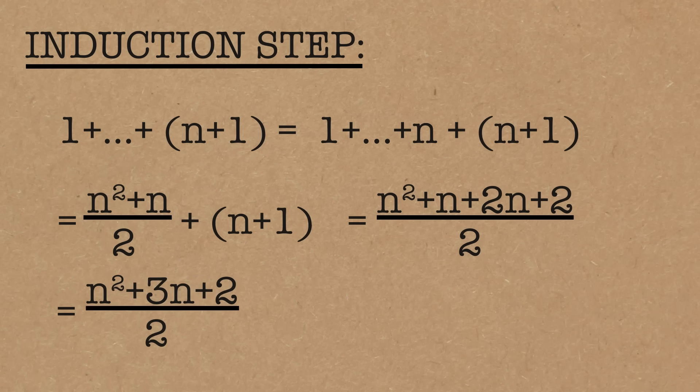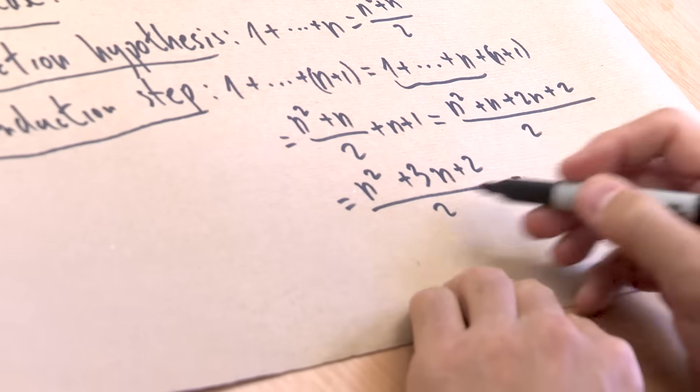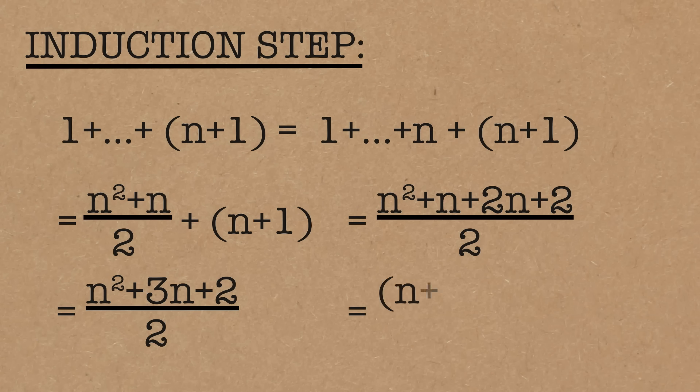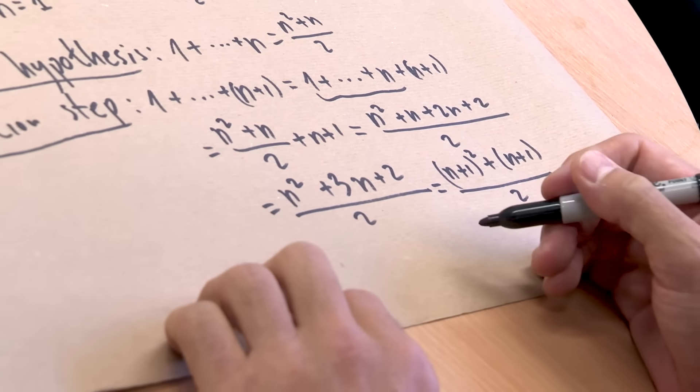So this becomes n squared plus n plus 2n plus 2 divided by 2, which becomes n squared plus 3n plus 2 divided by 2. And, well, I know the answer to this, because we know what we're trying to prove, but you can verify that this is indeed n plus 1 squared plus n plus 1 divided by 2. One way to do this is to open the parenthesis here and sum all of this, and you can check that we can do that.